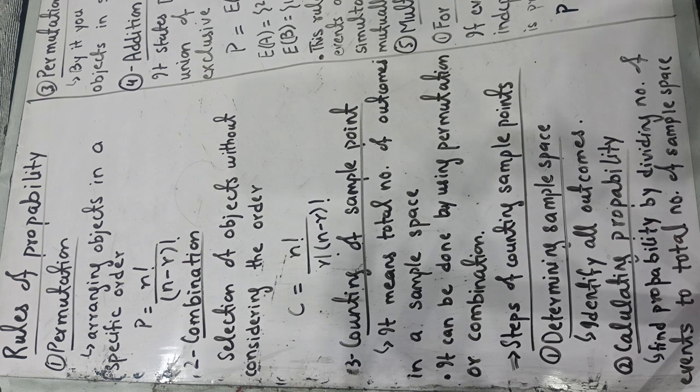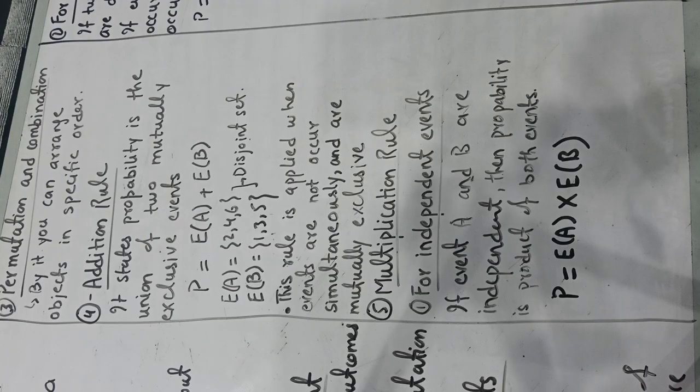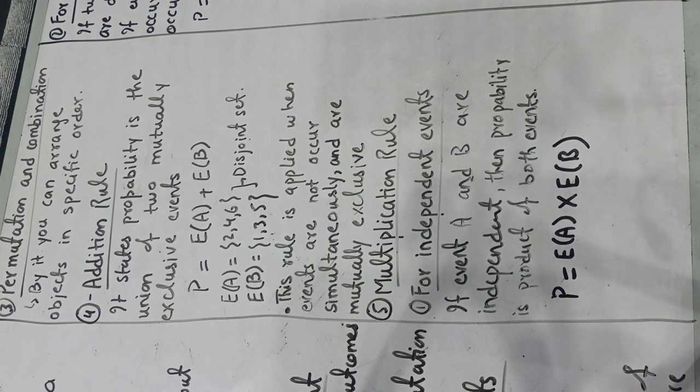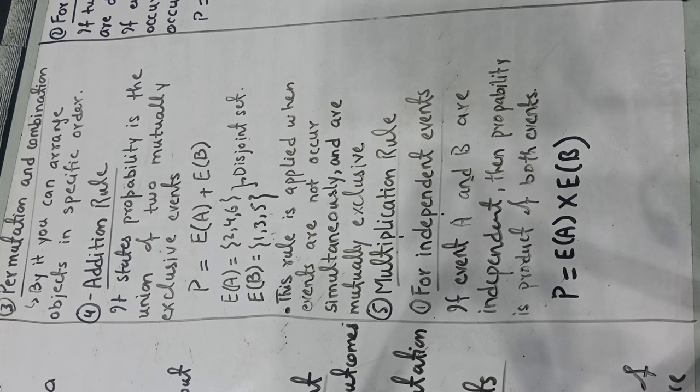The third step is to find the permutation and combination. What will you do? Permutation is to arrange and combination is to select without considering the arrangement. So now you have to arrange any data or any probability or answer. We will use permutation and combination.